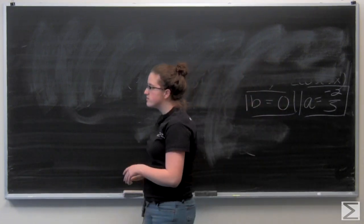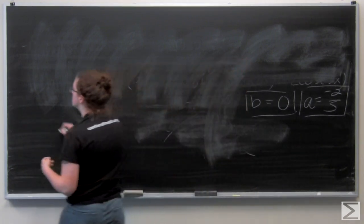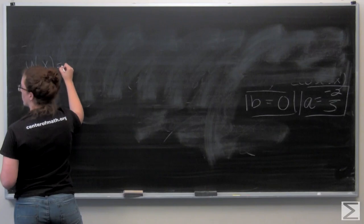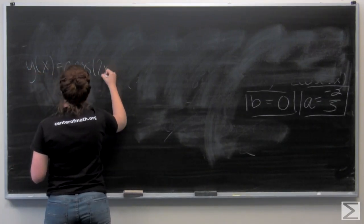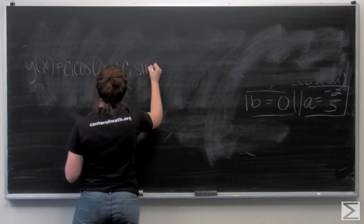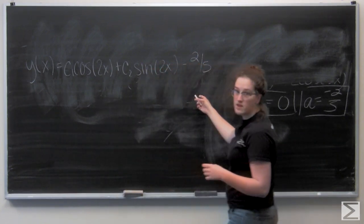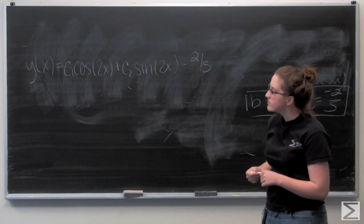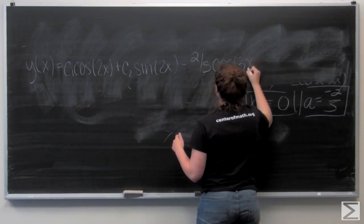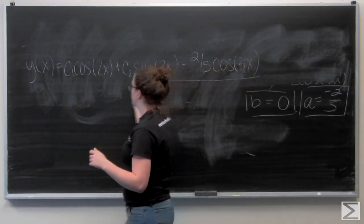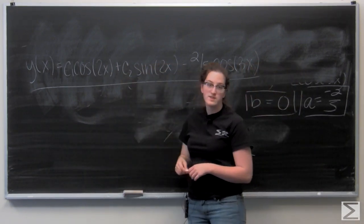So I know that the general solution y of x is going to be yc plus yp. I'm going to copy over yc. And then for yp I just get negative 2 fifths times cosine of 3x. And then I don't have a term for sine 3x. So this is my general solution y of x for some real coefficients c1 and c2.